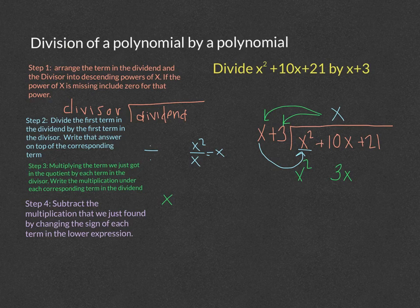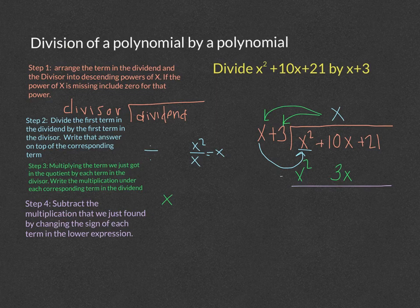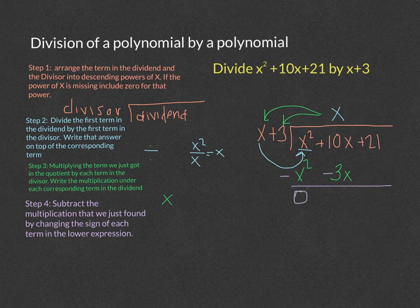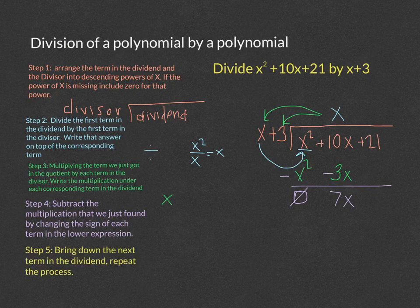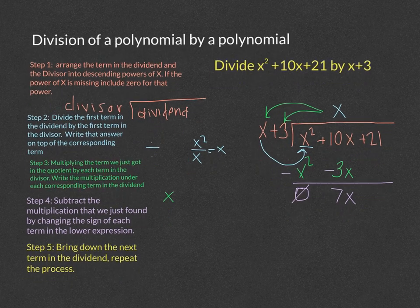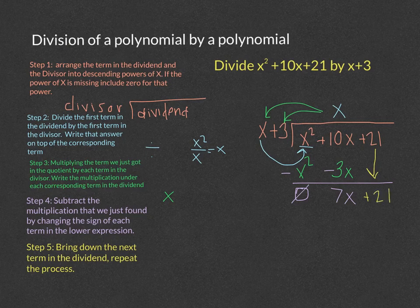The next step is subtraction. We subtract by changing the sign of each part in the lower expression. Both x squared and 3x are positive, so we make them negative. Then perform the operations: x squared minus x squared is zero, and 10x minus 3x is 7x. Bring down the next term in our dividend, which is 21. Now 7x plus 21 becomes our new dividend.